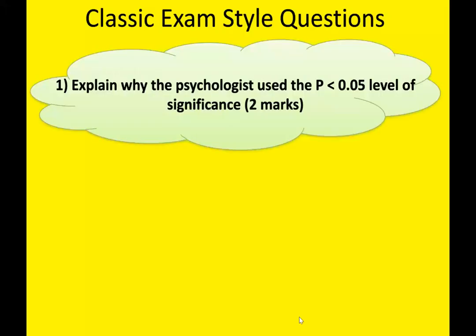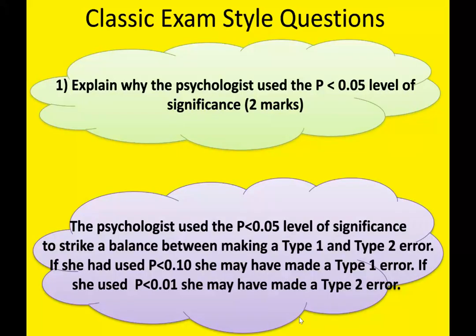Classic exam-style questions include: 'Explain why the psychologist used the p < 0.05 level of significance.' That question is asking you to talk about Type 1 and Type 2 errors. The answer is: the psychologist used the p < 0.05 level of significance to strike a balance between making a Type 1 and a Type 2 error. If she had used p < 0.10, she may have made a Type 1 error. If she used p < 0.01, she may have made a Type 2 error.